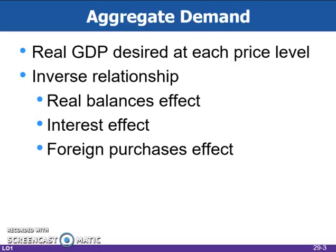The substitution effect doesn't apply within the scope of domestically produced goods, since there is no substitute for all goods. The income effect also doesn't apply in the aggregate case, since income is now varied with real GDP. The inverse relationship between price level and real output in aggregate demand is explained by three effects.